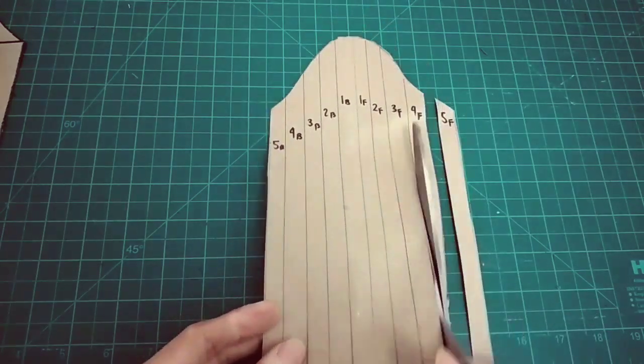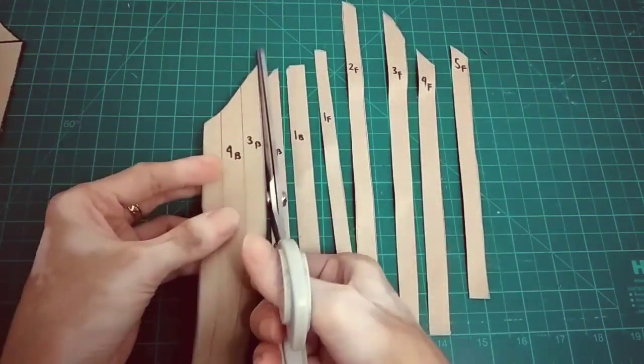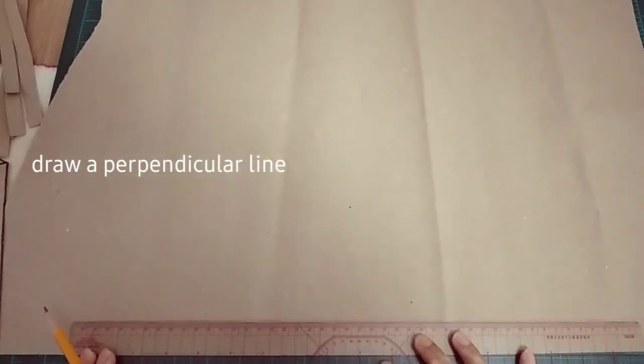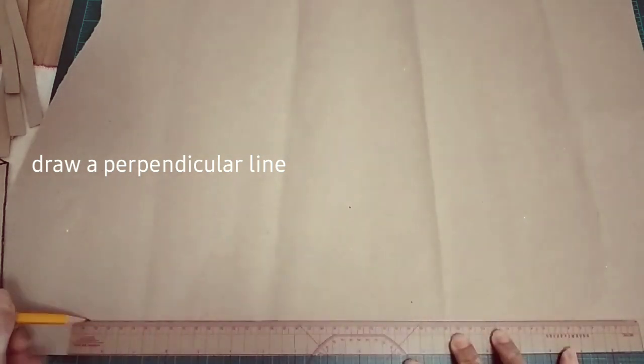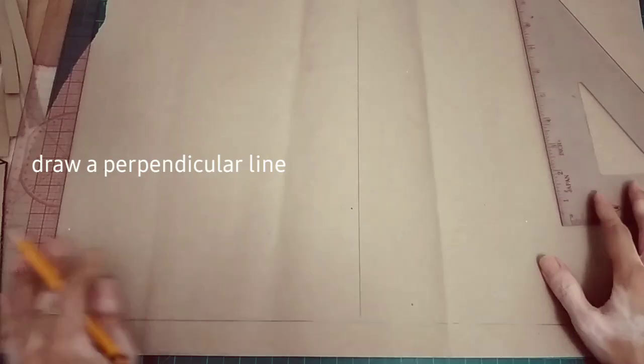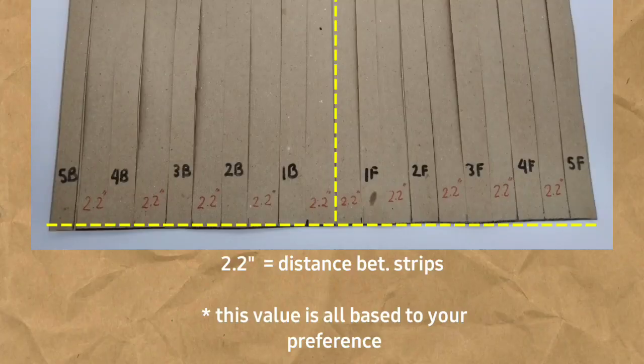The total number of strips is 10, so we have 5 strips for the front and 5 for the back. Next, draw a perpendicular line that will be our guide line. This is the diagram for the distance of the strips.